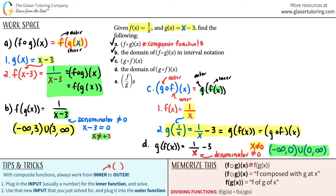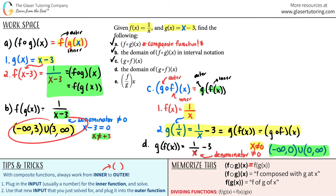Notice two important things: even though we used the same two functions — just swapping the order — one being f of g of x and the other g of f of x — the resulting composite function and domain are completely different. Composite functions are very specific with their ordering. You cannot swap the functions and expect the same result.